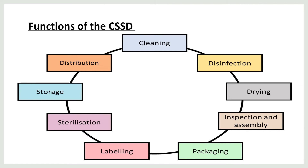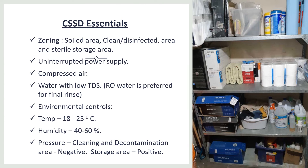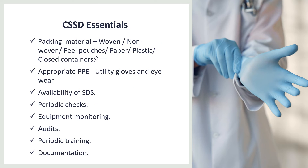The functions of the CSSD include cleaning, disinfection, drying, inspection and assembly, packaging, labeling, sterilization, storage, and distribution. Essential infrastructure includes zoning, uninterrupted power supply, compressed air, water with low total dissolved solids (TDS), and RO water for the final rinse. Environmental controls require temperature of 18 to 25 degrees Celsius, humidity of 40 to 60 percent. Decontamination areas maintain negative pressure ventilation, while storage areas maintain positive pressure. Packaging materials include woven, non-woven, peel pouches, and paper or plastic closed containers. Appropriate PPE includes utility gloves and eye wear, with availability of safety data sheets.